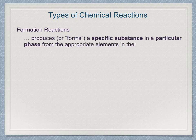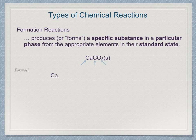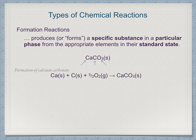Formation is the name given to a reaction that produces a given substance in a specific phase from the appropriate elements in their standard states. For example, consider calcium carbonate in the solid phase. By looking at the substance, you can see it is made up of the elements calcium, carbon, and oxygen. We can write the formation reaction as: calcium solid + carbon solid + 3/2 O2 gas → calcium carbonate solid.